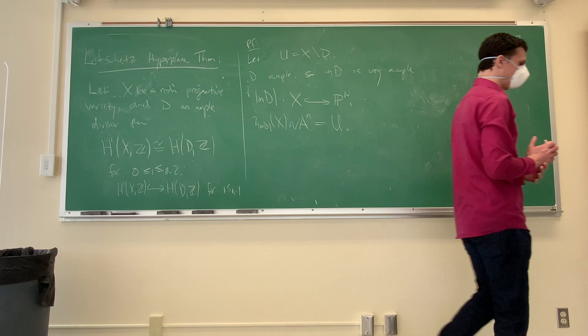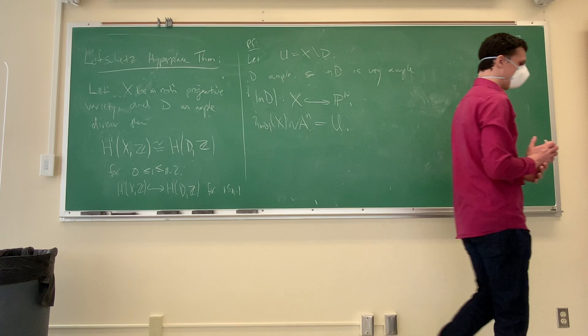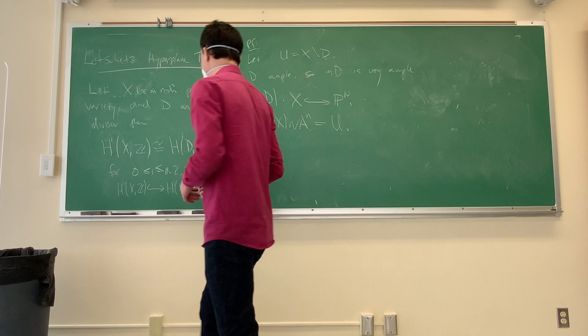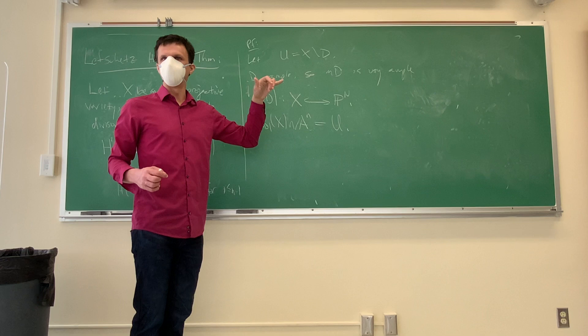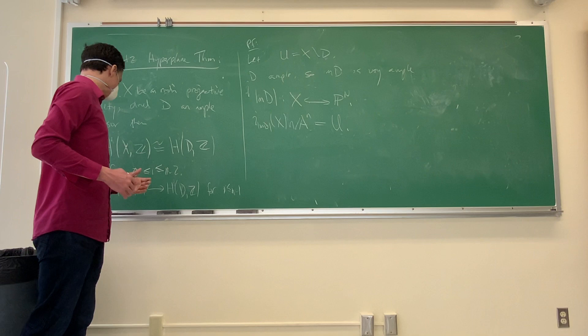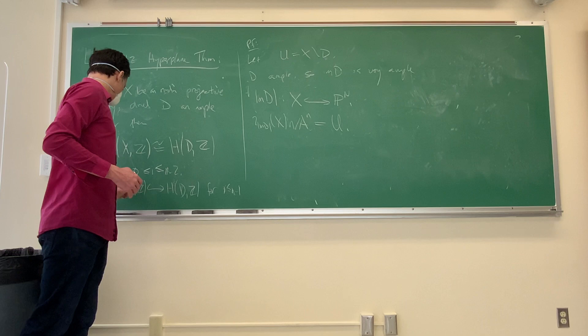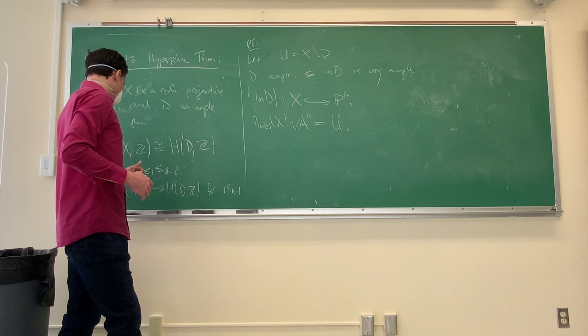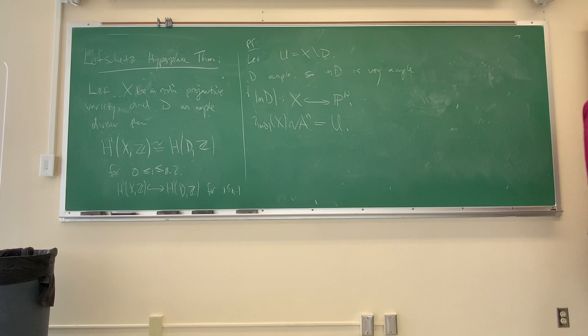We then unwind the previous exact sequence to say that the relative homology of X with respect to D vanishes once i gets large or small enough. Tracking through the exact values, we get that H^i(X; Z) is isomorphic to H^i(D; Z) for i between 0 and N-2 inclusive, and for i = N-1 we get an injective map.